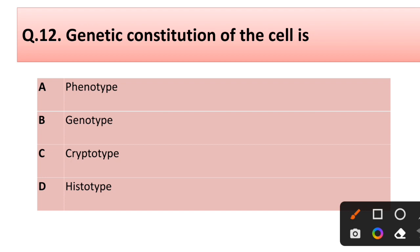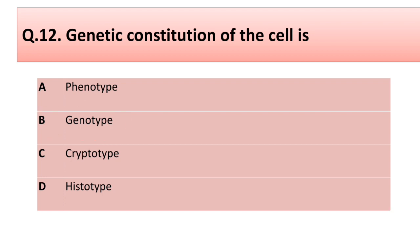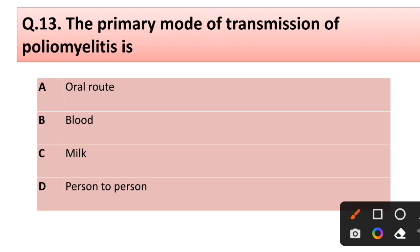Question number twelve: the genetic constitution of the cell is called — options: phenotype, genotype, cryptotype. Correct answer is option B: genotype. Question number thirteen: the primary mode of transmission of poliovirus — options: (a) oral route, (b) blood, (c) milk, (d) person to person.